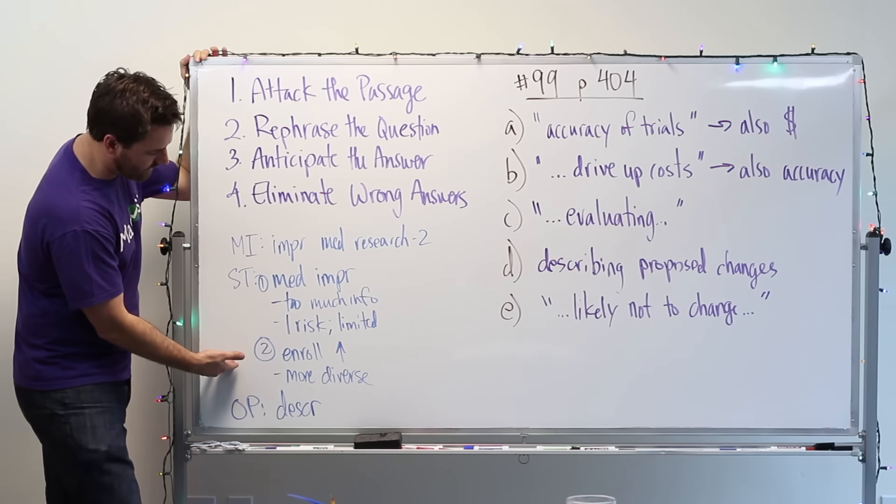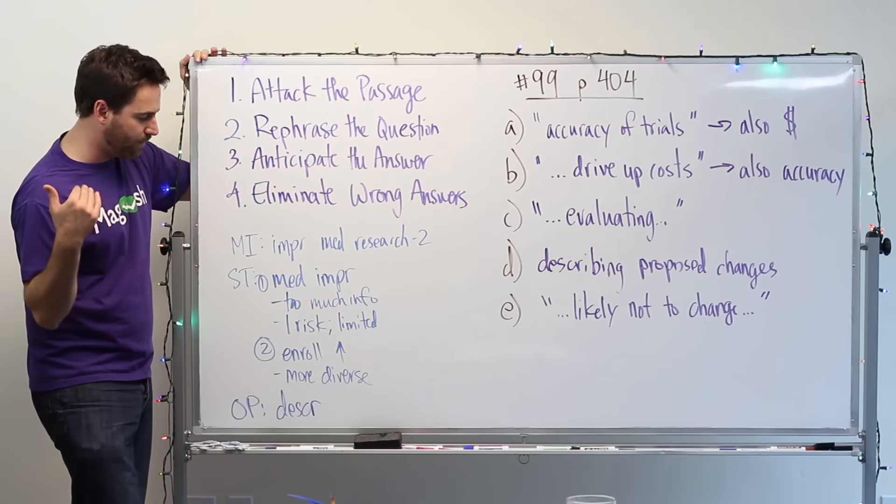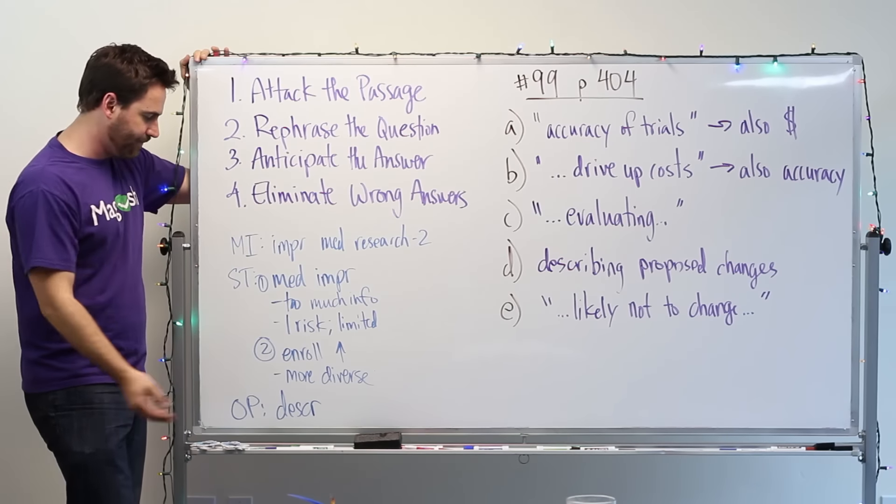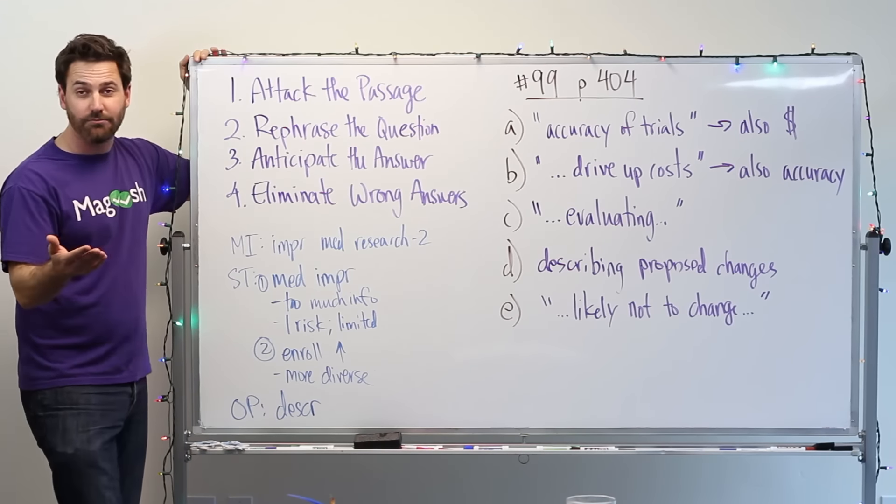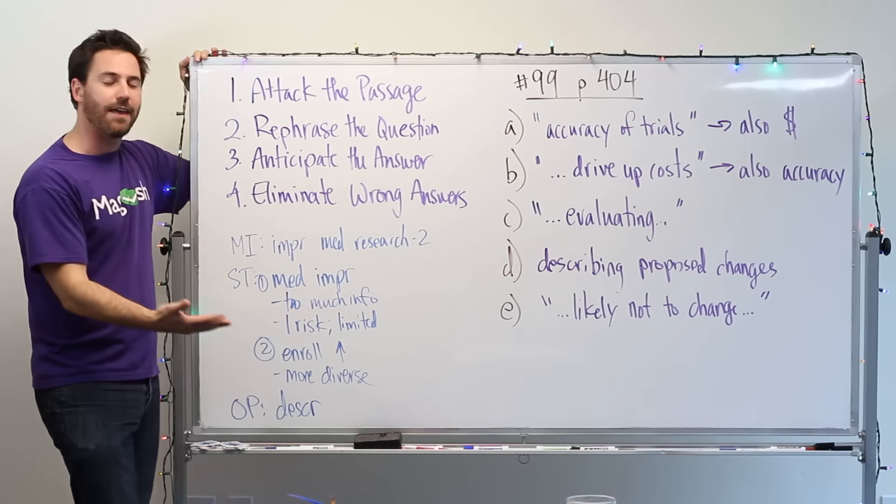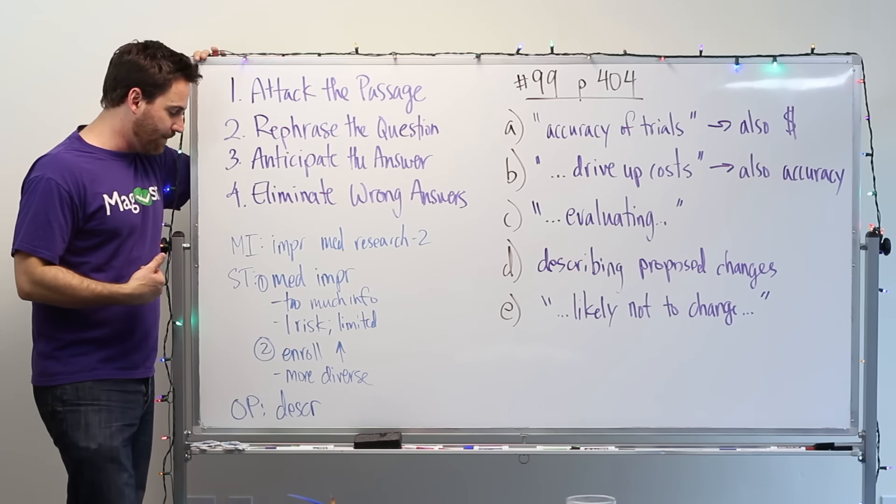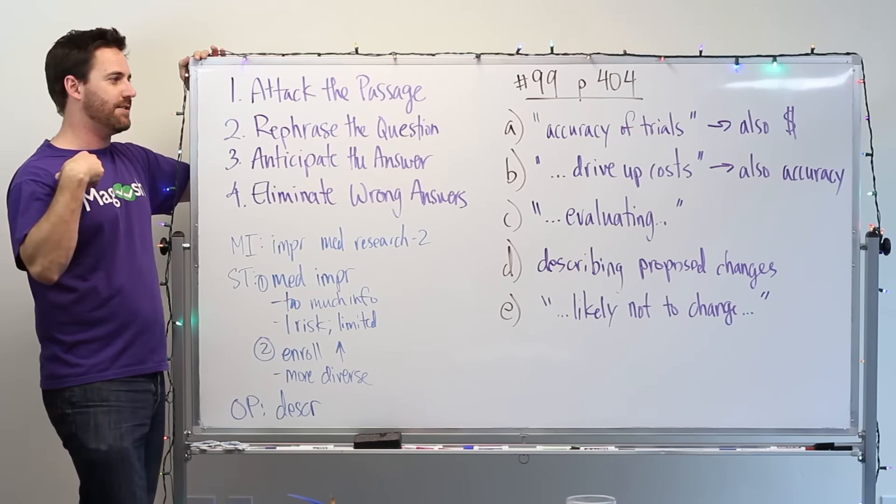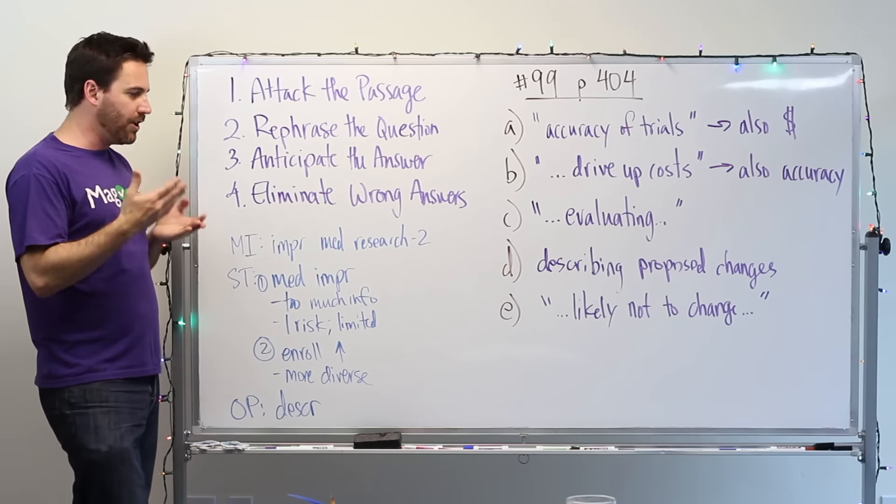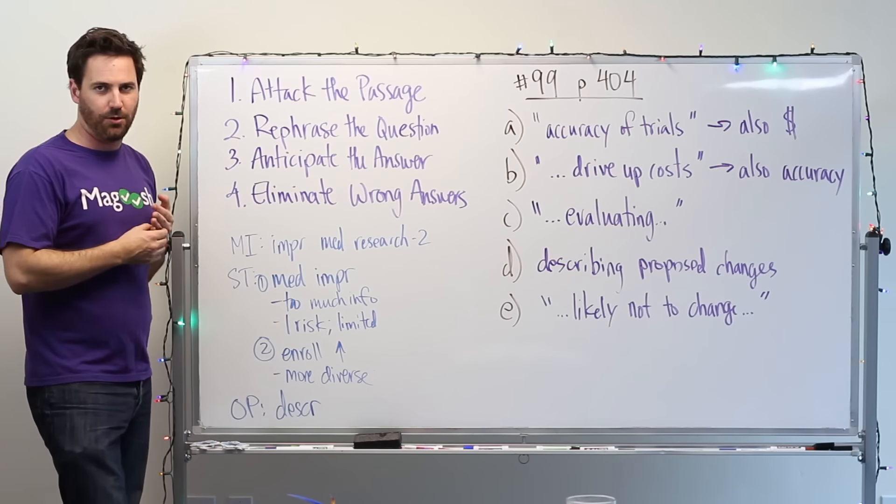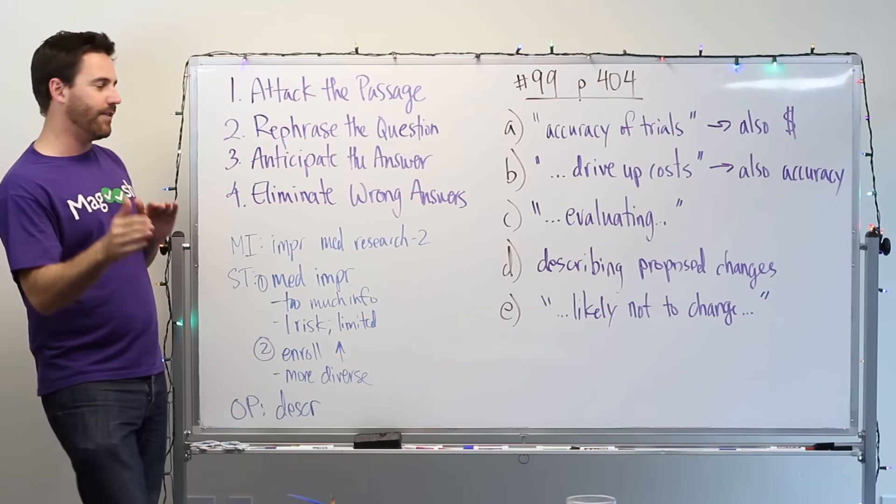Then in the second passage, they talk about another way to improve it, which is by enrolling more people. This allows for more diverse group and you can get better data. And that's it. The opinion of this passage or the tone of the passage is descriptive. There's no opinion here. The author isn't arguing a point of view. It's really just describing what these two people have said about improving medical research. Okay. We've attacked the passage.